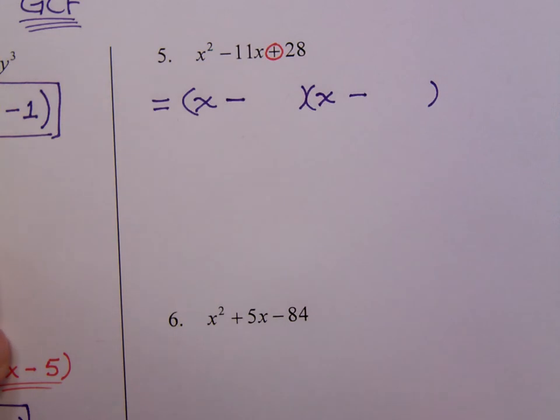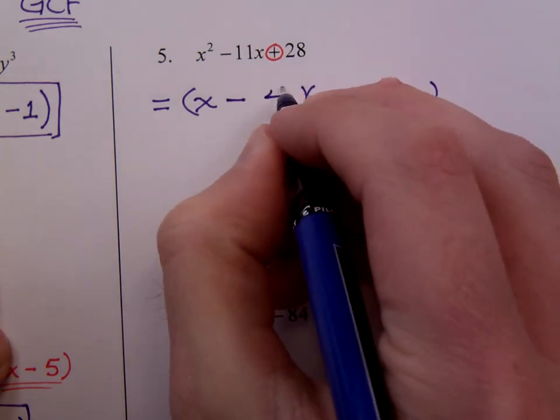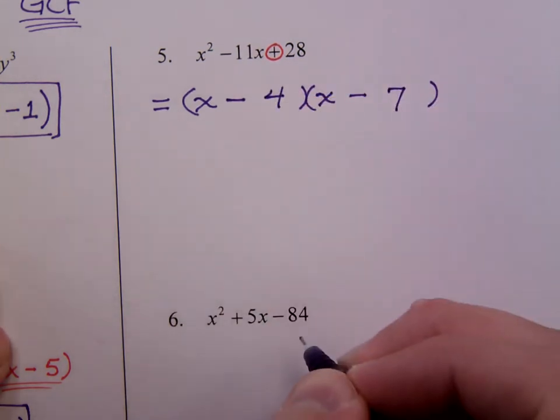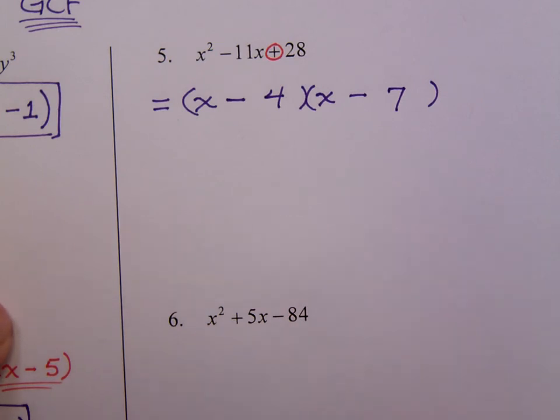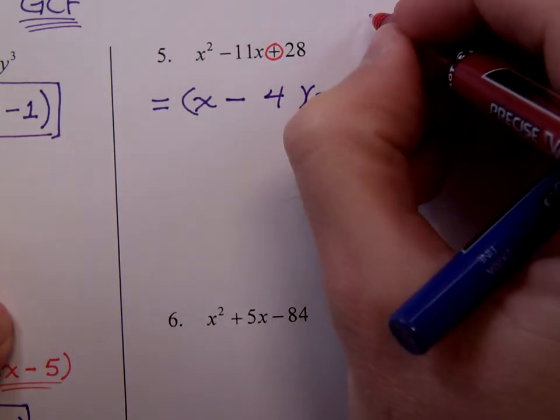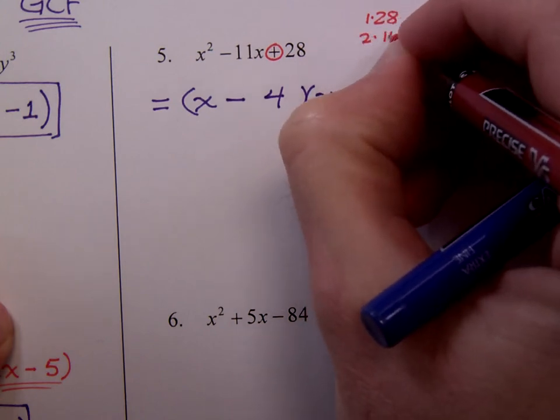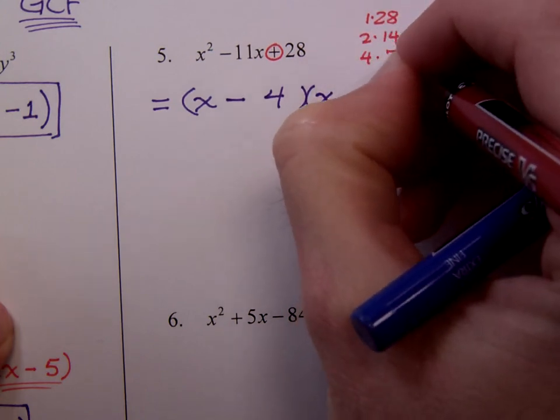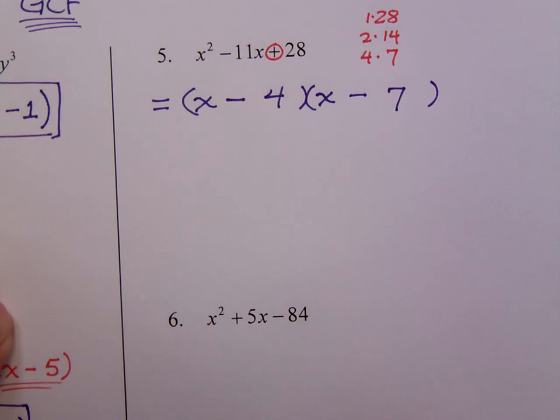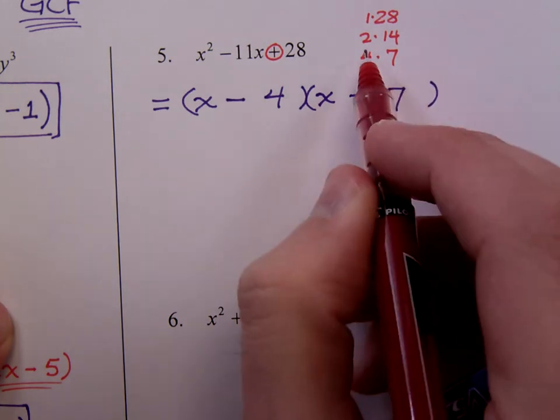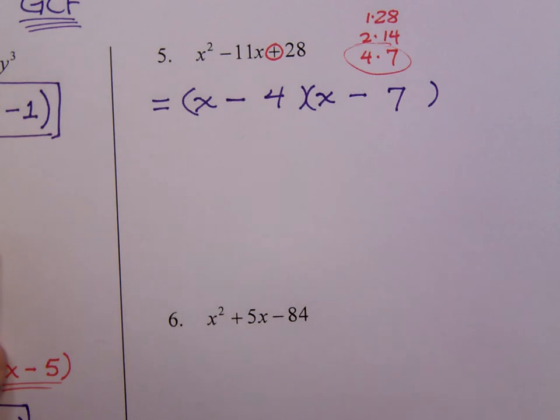Well, the factors of 28 that add to give you 11 would be 4 and 7. And if you're not sure about this, you can list all of the factors for 28. That's 1 times 28, 2 times 14, and 4 times 7. So that is the only combination that adds to give you 11.